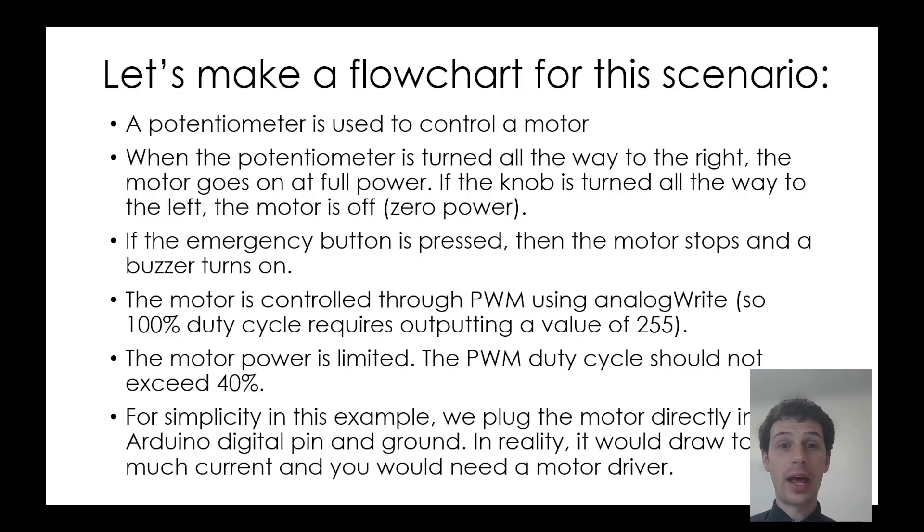We'll make a flowchart for this scenario: A potentiometer is used to control a motor. When the potentiometer is turned all the way to the right, the motor goes on at full power. If the knob is turned all the way to the left, the motor is off. If the emergency button is pressed, the motor stops and a buzzer turns on.